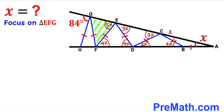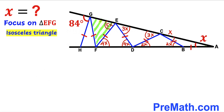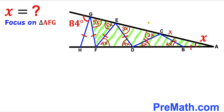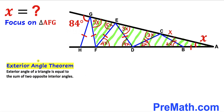Now let's focus on triangle EFG. We can see this is an isosceles triangle since this side length equals this side length. Since this is an isosceles triangle, this angle has got to be congruent to this angle. If this angle is 5X then this angle has got to be 5X as well. Focusing on triangle AFG and recalling the exterior angle theorem, this exterior angle equals 5X plus X, which makes 6X.